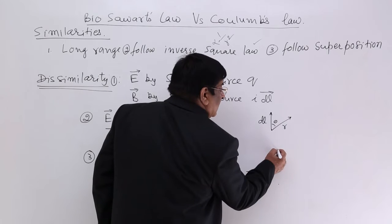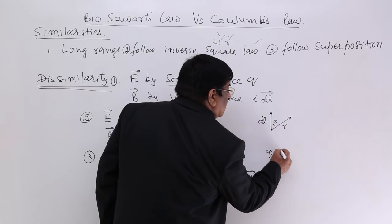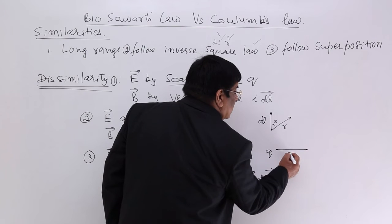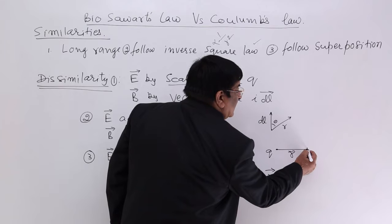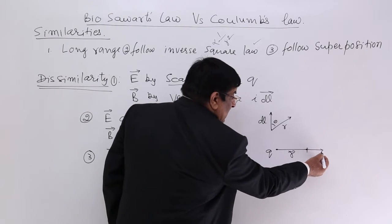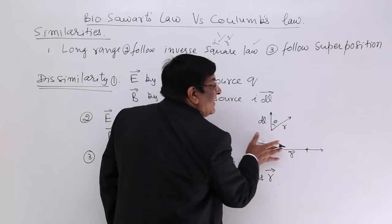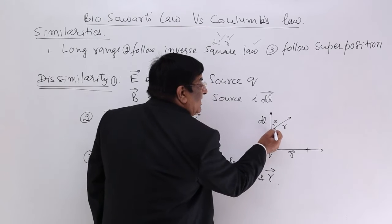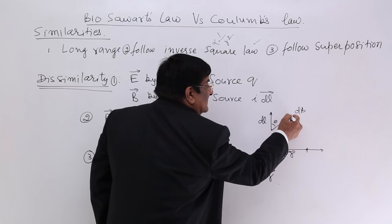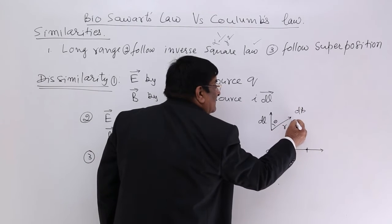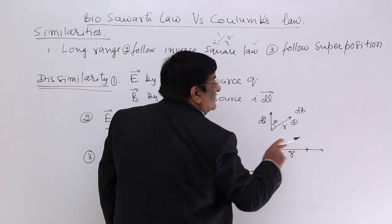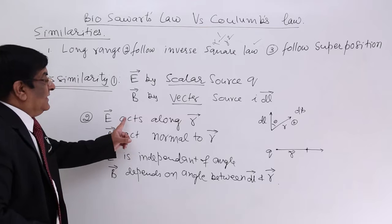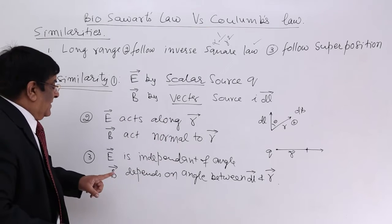Then electric field acts along R. If this is charge Q, this is the distance R, then the direction of electric field at this point is either this way or this way, but it is always along the R. But in magnetic field, we have seen that this is inside it—that is perpendicular to R. This is along the R. This is the difference. E acts along R. B acts normal to R.